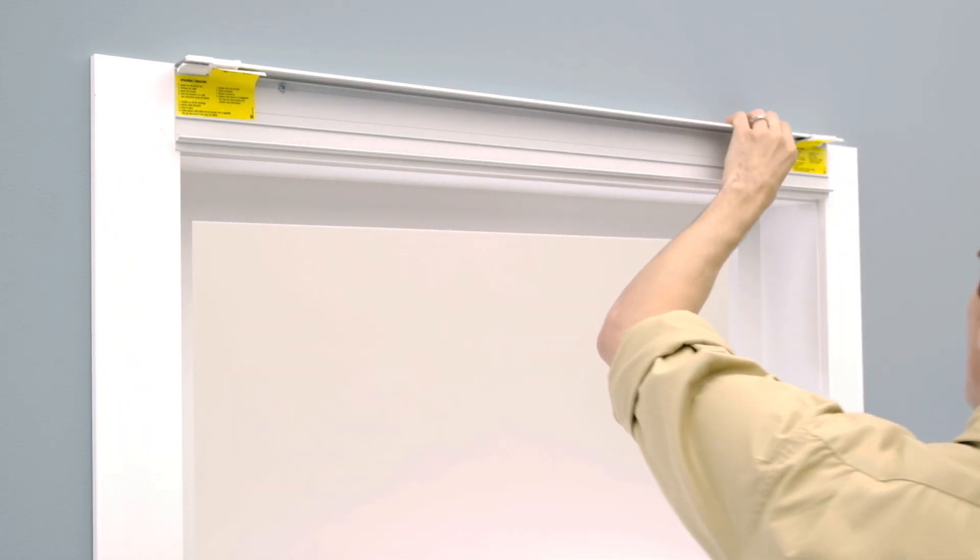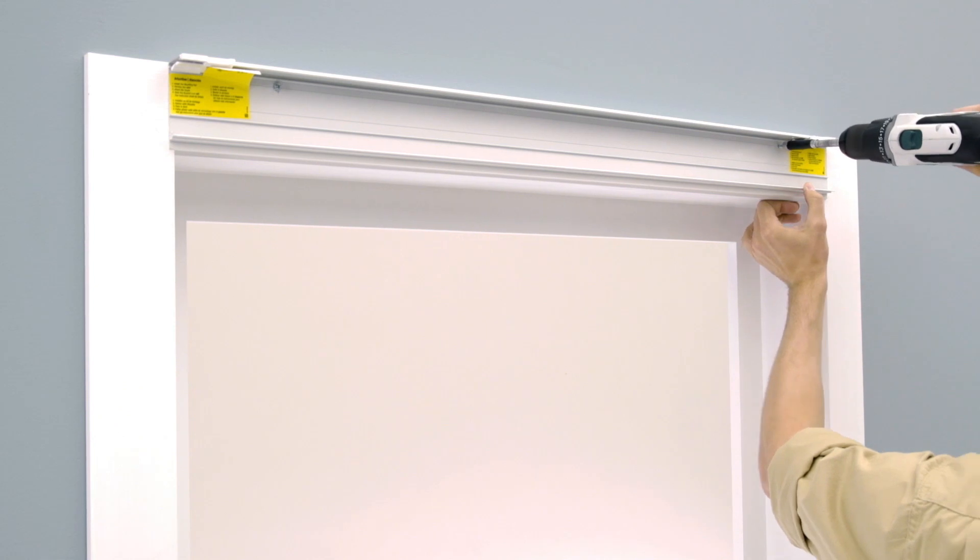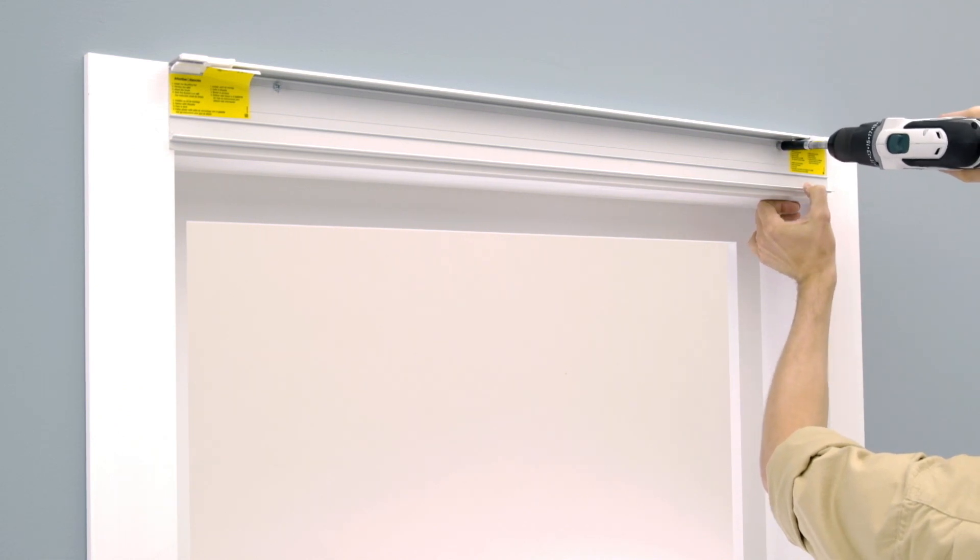If you're installing the shade above the trim, place the included spacers behind the mounting screws to provide additional clearance as the shade lowers.